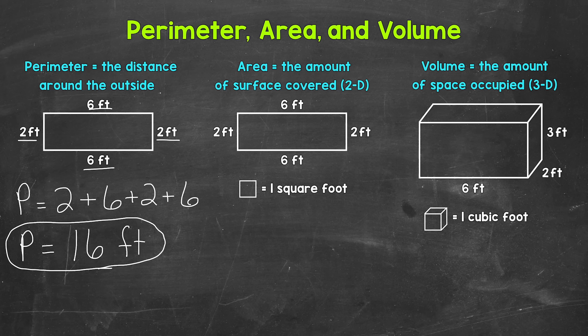Now area is the amount of surface a shape covers, and we are talking two-dimensional, or 2D, for area — the flat surface covered. This is important to keep in mind because once we move on to volume, we will be talking three-dimensional, or 3D. So again, for area, the amount of surface a shape covers.